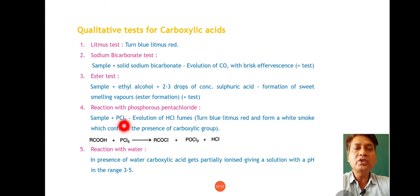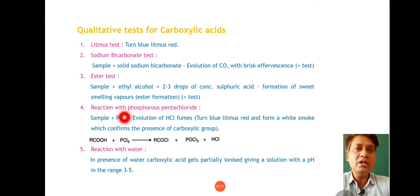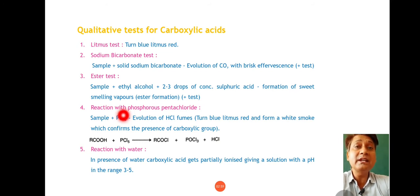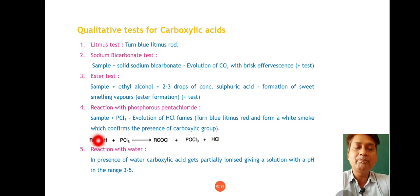Next test is reaction with phosphorus pentachloride. Sample ko PCl5 ke saath treat karna hai, and if evolution of HCl takes place, it means the sample contains carboxylic acid. Test tube mein se HCl ke fumes niklenge, usko blue litmus ke paas rakhna hai. Agar blue litmus red mein convert hota hai, iska matlab HCl form hua hai aur sample carboxylic acid ho sakta hai.